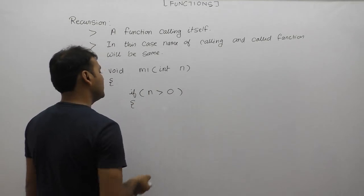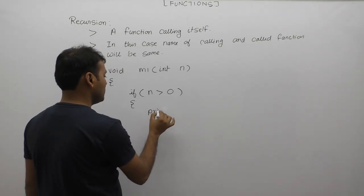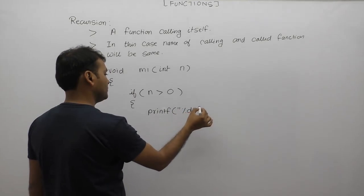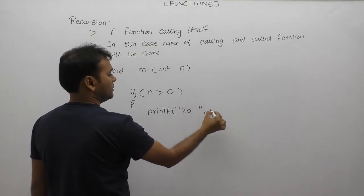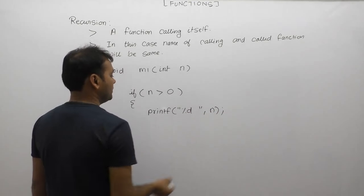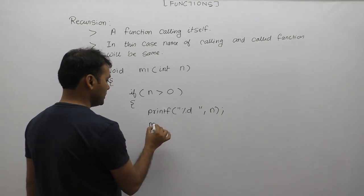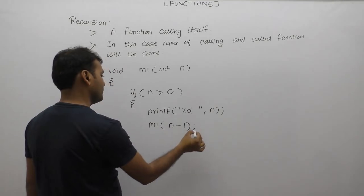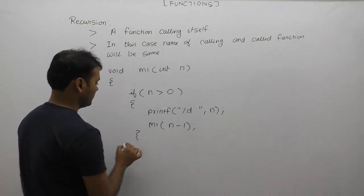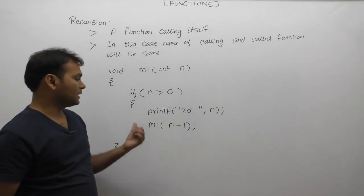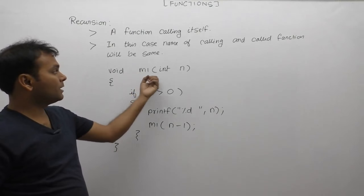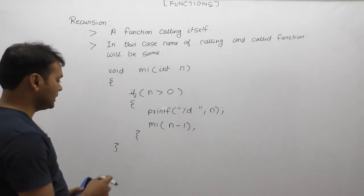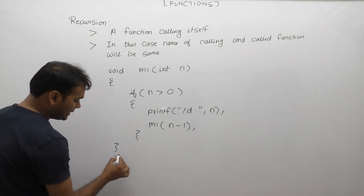When the condition is true, we display the value of n using print. Then we call the same function m1 again by supplying n minus 1. This is the recursive call within the function body.